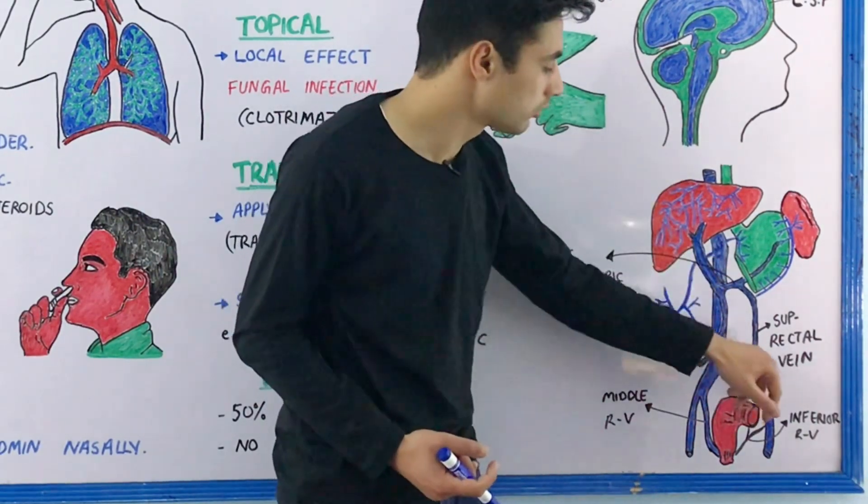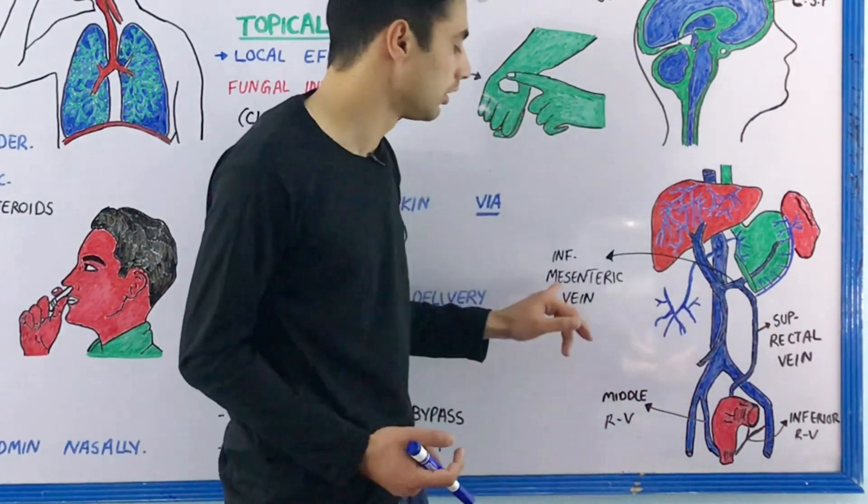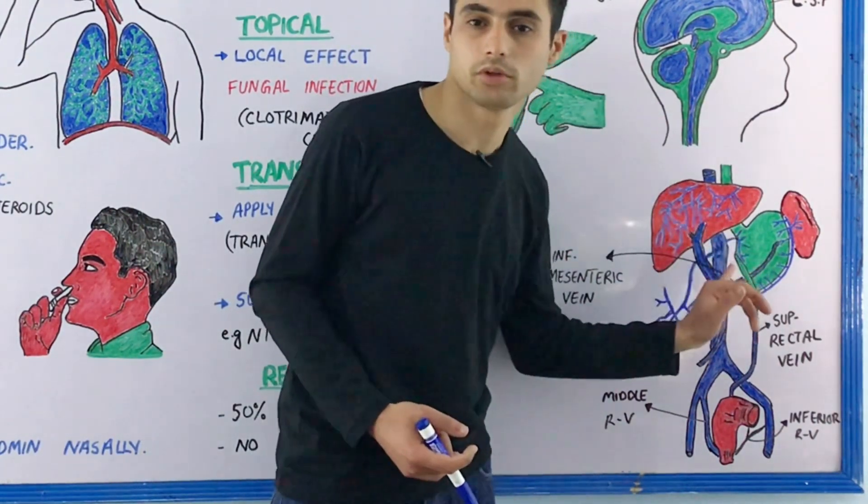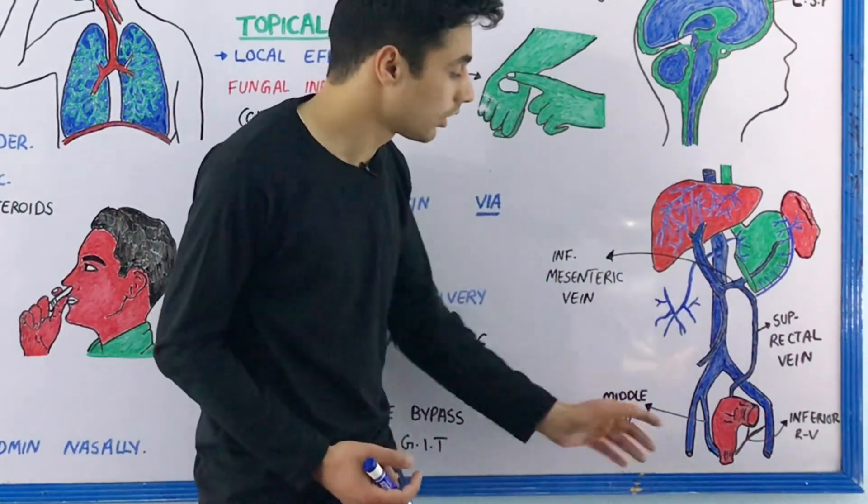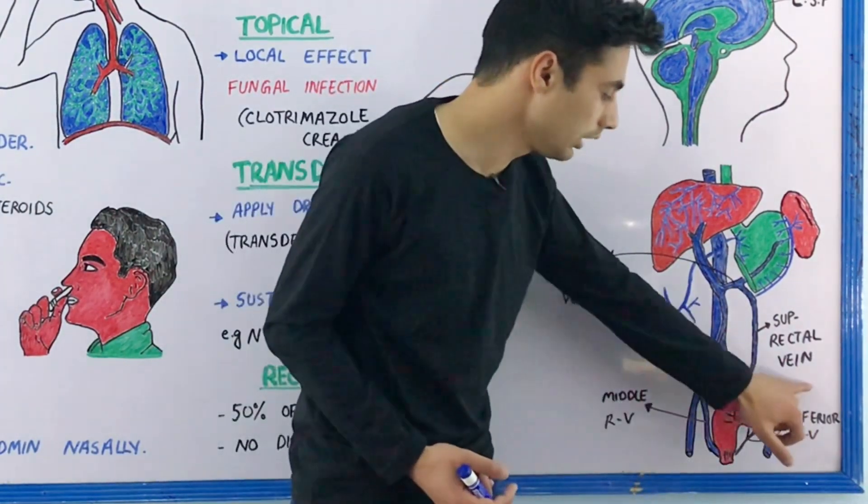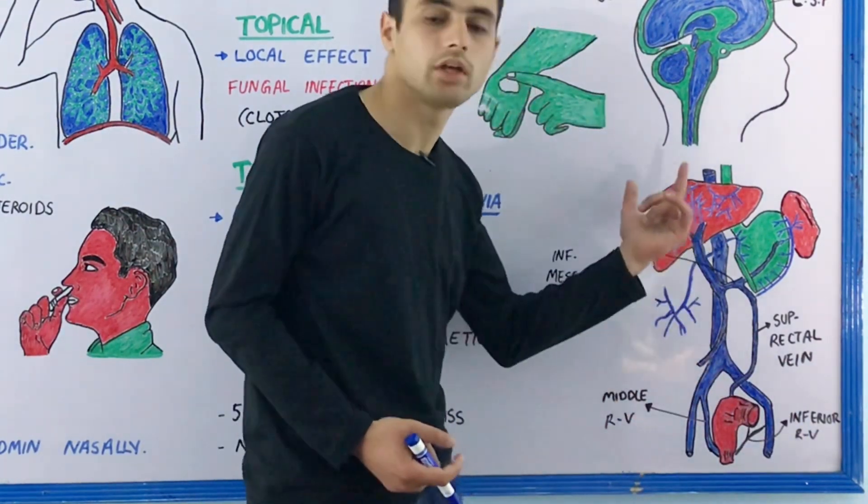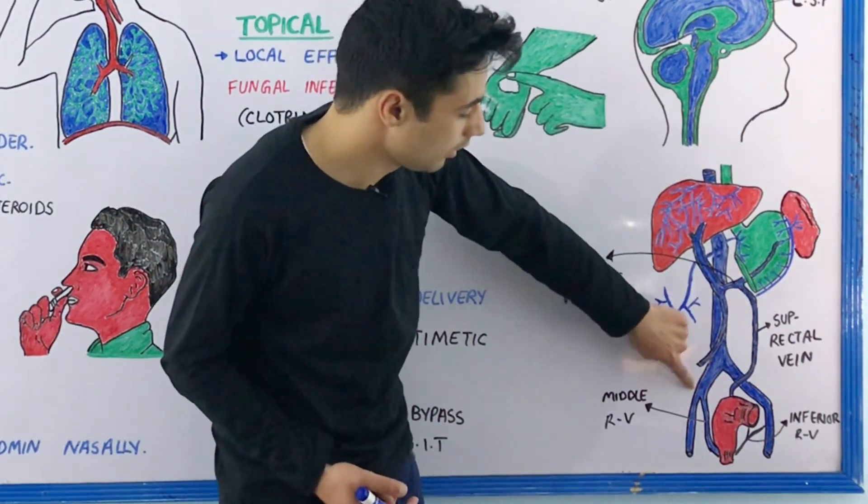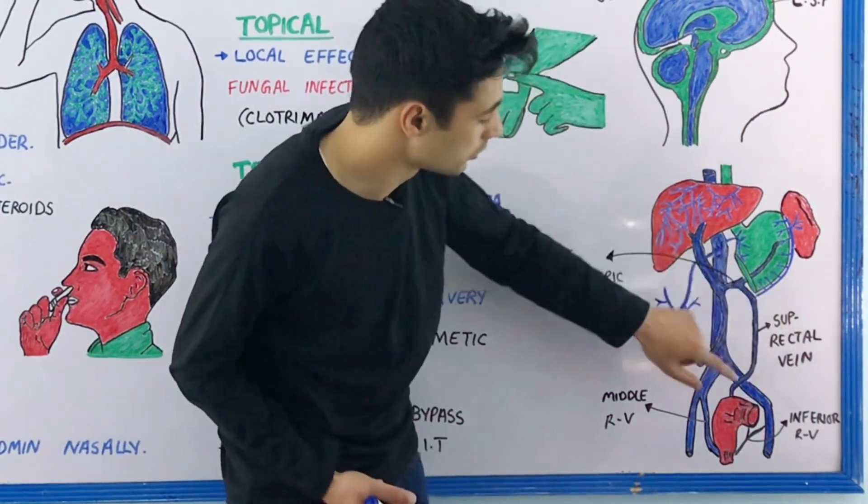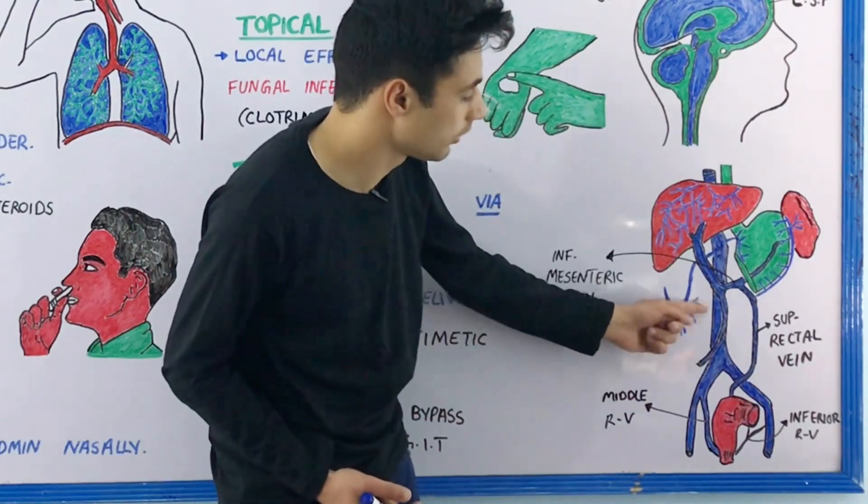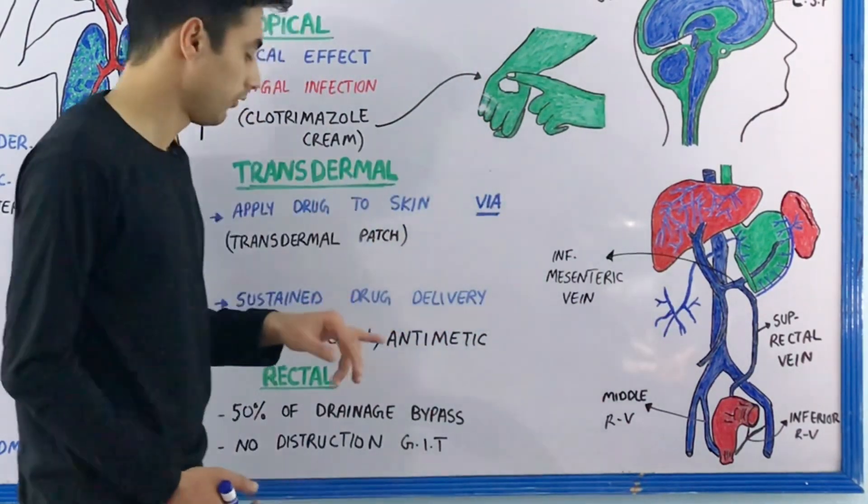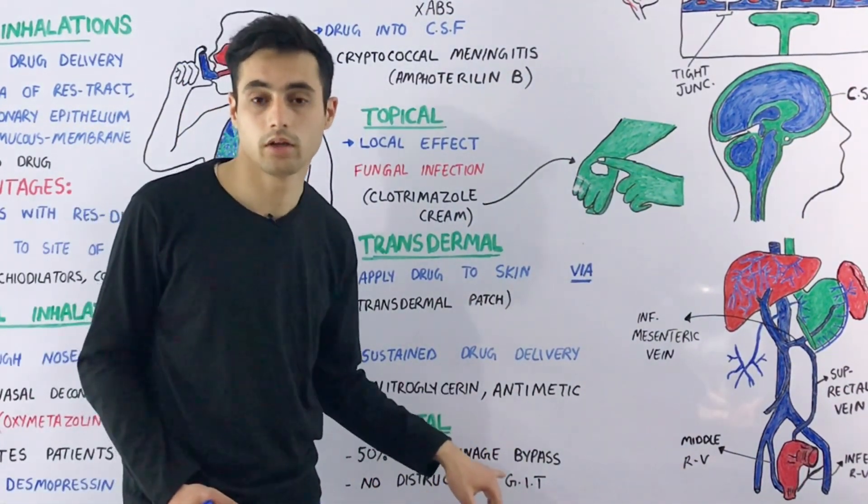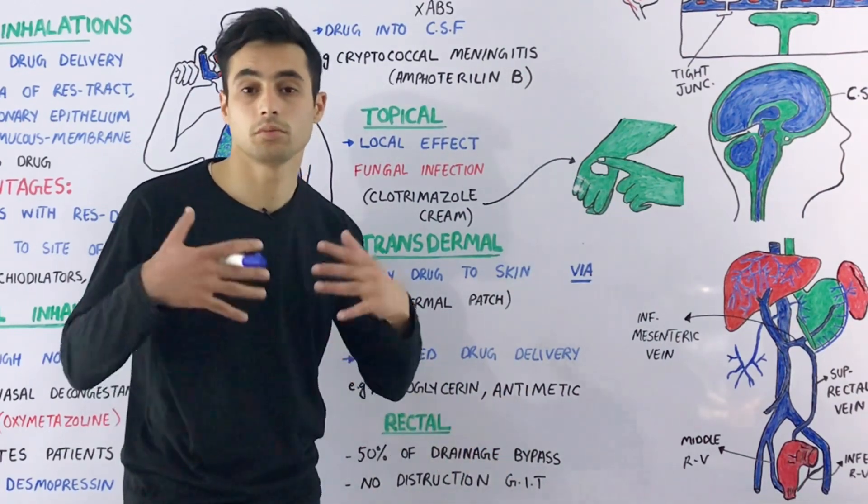Drugs passing through the superior rectal vein into the inferior mesenteric vein eventually reach the liver and undergo first-pass metabolism. However, drugs absorbed through the middle or inferior rectal veins bypass the liver. They drain into the internal iliac arteries on both sides and directly into the inferior vena cava. In this way, 50% of the drainage bypasses the liver and first-pass metabolism is reduced by half.